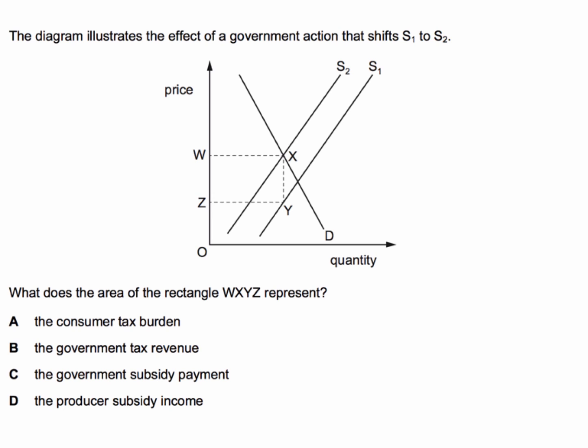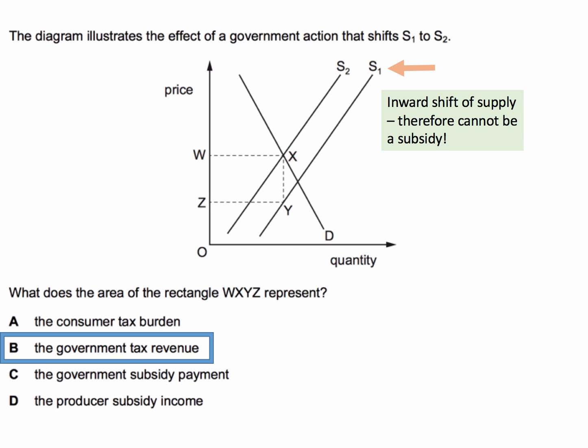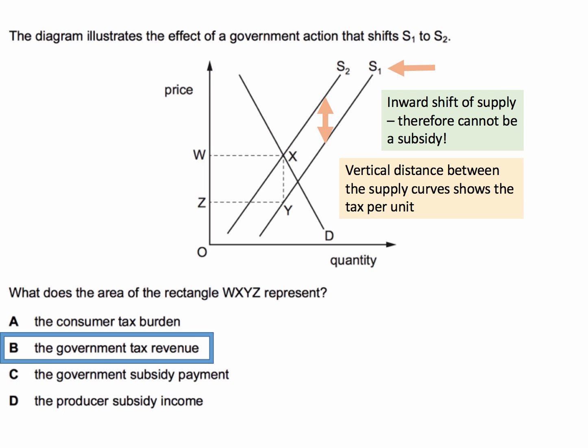So there's been an inward shift of supply from S1 to S2. What does the area WXYZ represent? The correct answer — and I hope you got this right — is B: the government tax revenue. Crucially, it's been an inward shift of supply from S1 to S2, so it cannot be a subsidy, which helps eliminate options C and D.